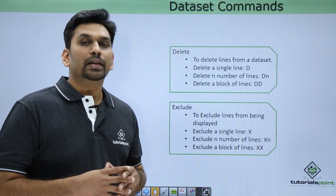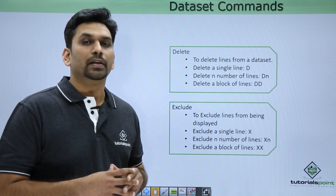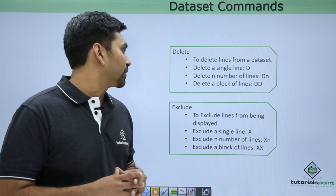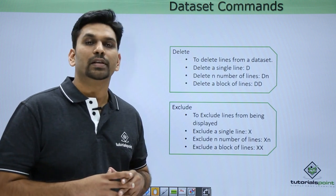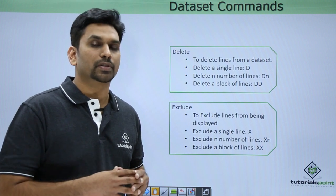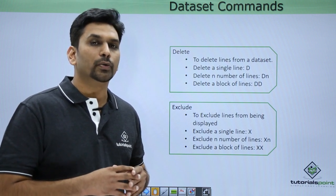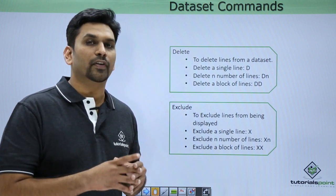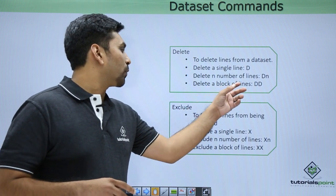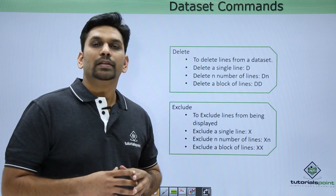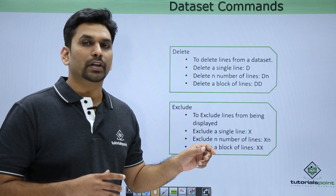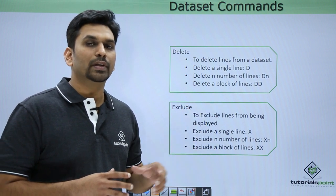If you write D, only a single line will be deleted. If you want to delete N number of lines, write D followed by a number — for example, D5 will delete five lines from that area. If you want to delete a block of lines, type DD at the starting line and DD at the ending line, and when you hit Enter, that block will be deleted completely.